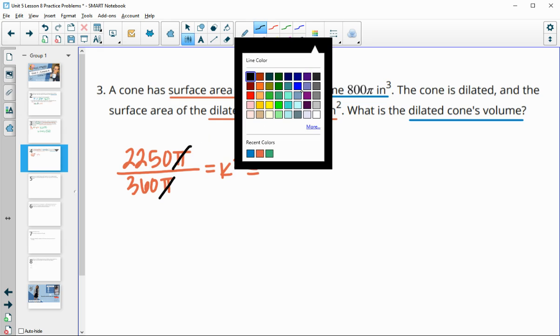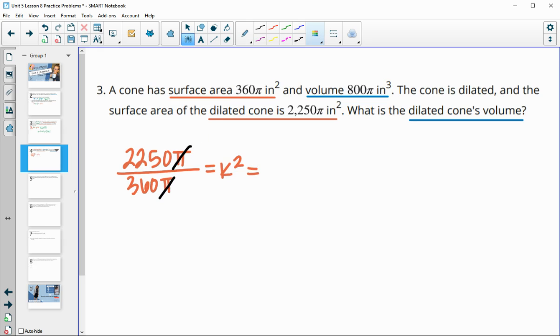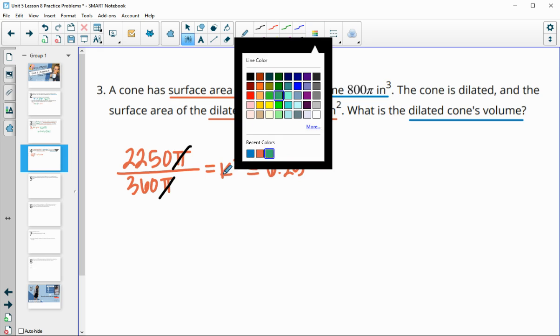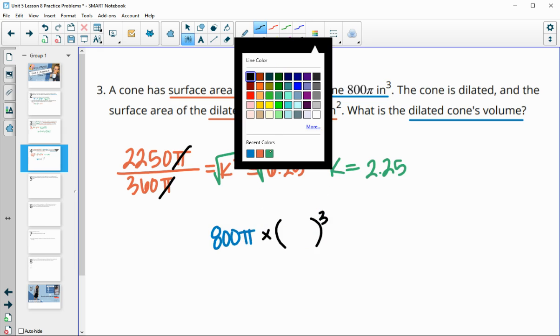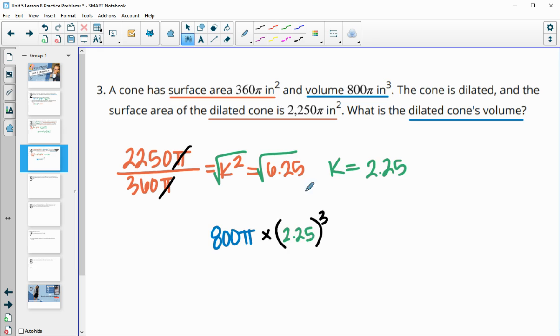The new surface area is 2,250 pi versus the original is 360 pi. When we compare areas, we'll get our k squared. They both have pi, so that will cancel out. We get our k squared value of 6.25. To get k, we will square root this, which gives us our scale factor of 2.5. Now when we go to find the new volume, we need to take the original volume, which is 800 pi, and multiply that by our scale factor cubed. We will multiply by 2.5 to the third power.